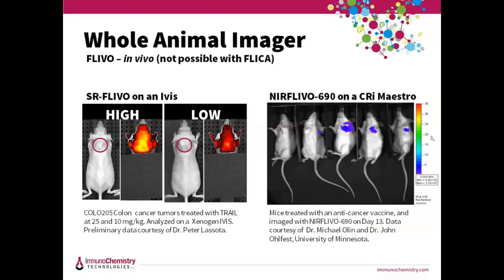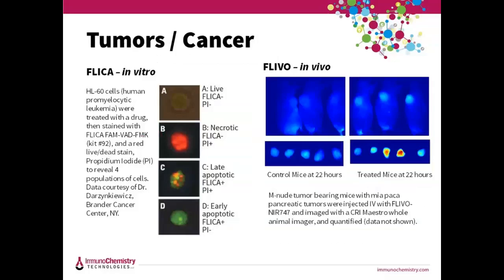Another difference and most unique feature of FLIVO is that it can be detected on whole animal imagers — this is simply not possible to do with cultured cells. On the left, Colo-205 colon cancer tumors grown on the back of female nude mice for 27 days were treated with TRAIL at different doses, then imaged with red SR-FLIVO using an IVIS instrument. The high dose of TRAIL is killing more tumor cells as they fluoresce brighter. On the right, we're looking at anti-tumor effects of an experimental anti-cancer vaccine. By day 13, the tumor was nearly gone in the treated mice, while mice receiving saline had large, fast-growing tumors. We used NIR FLIVO at 690 on a CRI Maestro instrument to see that the vaccine was working. FLIVO is truly unique in that we can directly analyze the animal to help guide researchers toward finding the right treatment or vaccine.